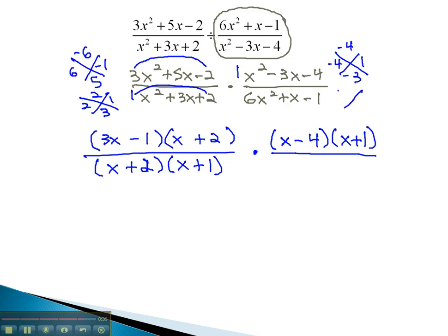In the denominator, we're multiplying to negative 6 and adding to 1. This is going to be 3 and negative 2.